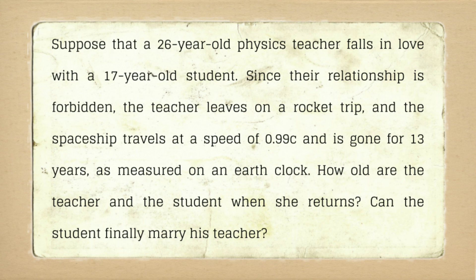Before we dive into the mathematical calculation, let us first identify the information given in the problem. First, we have the age of the physics teacher, which is 26 years old. Next, the age of the student, which is 17 years old.